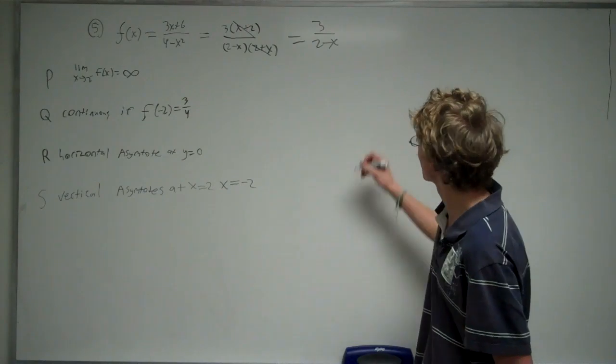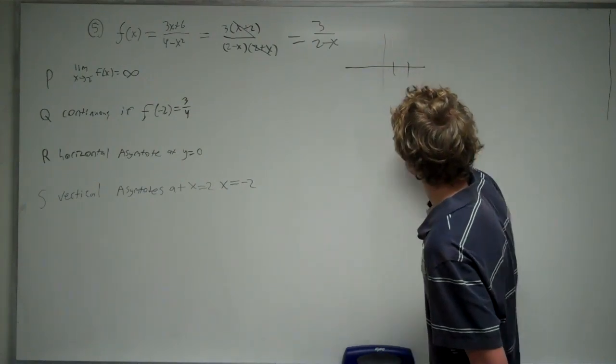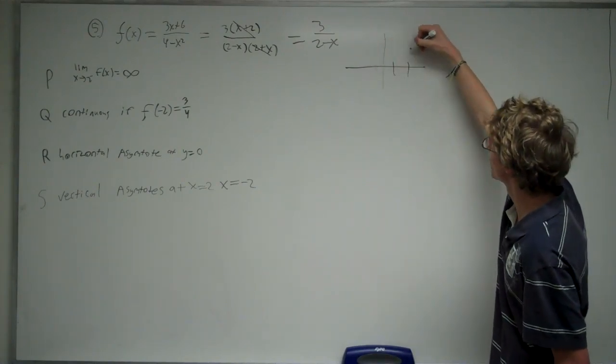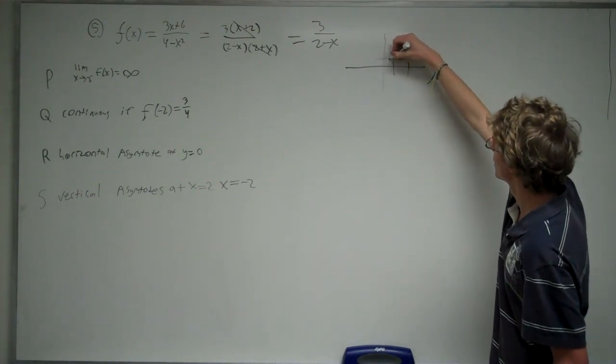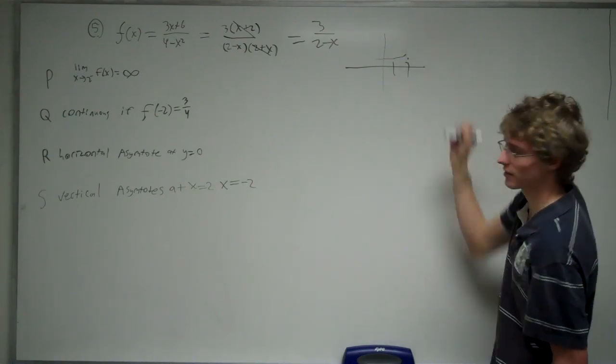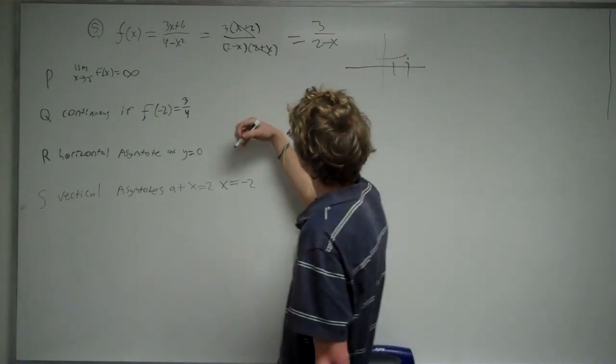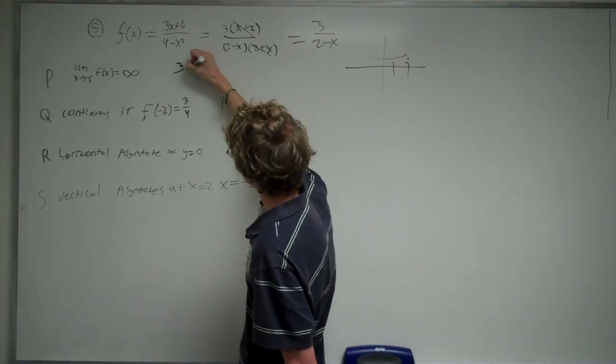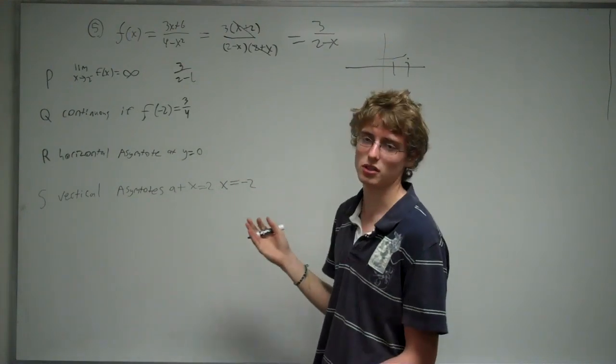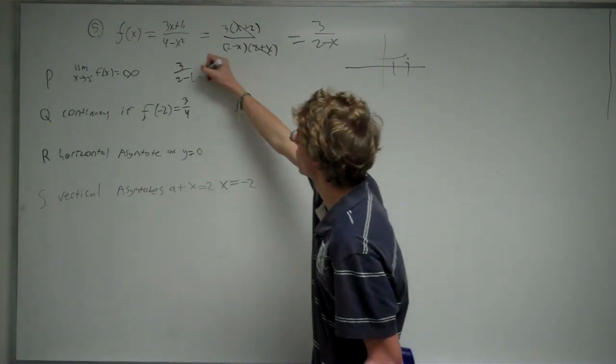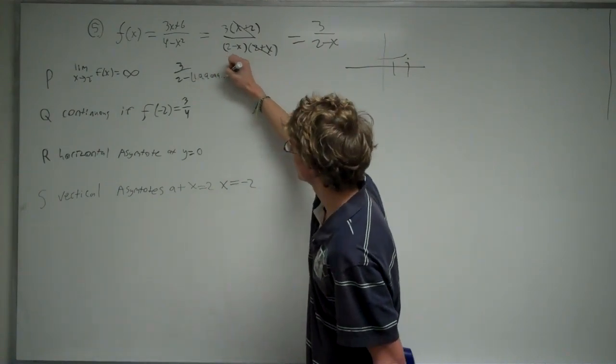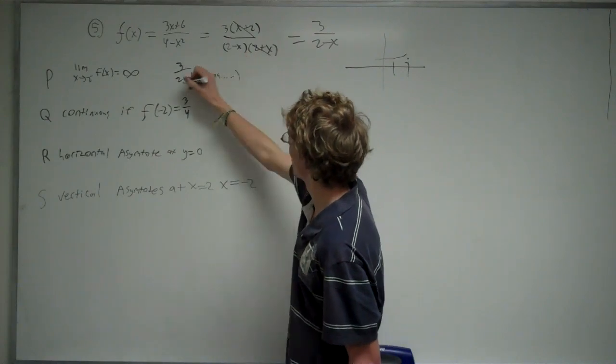What that means is if you had a graph, here's 2, we're approaching 2 from the left, so we're coming here. We're not quite getting to 2, but we're just slightly less than 2. So what you would do is you would take this, 2 minus, and 2 from the left, something close but slightly less than 2, would be 1.99999 off to infinity with 9s.